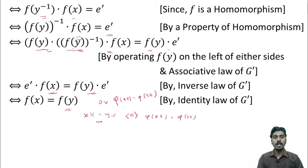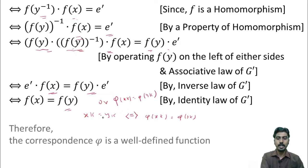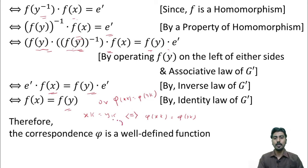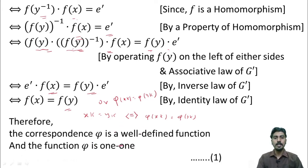This means that xK equal to yK implies phi of xK equal to phi of yK, and phi of xK equal to phi of yK implies xK equal to yK. On the one hand, the rule we defined is a well-defined function. On the other hand, phi is one-one. We have two conclusions: the correspondence phi is a well-defined function, and phi is one-one. Let me take this statement as 1.